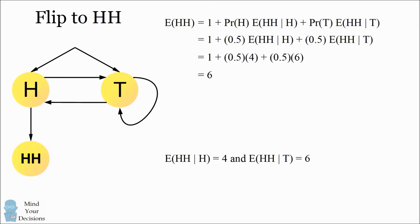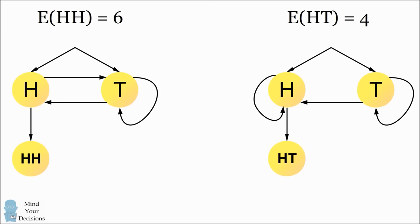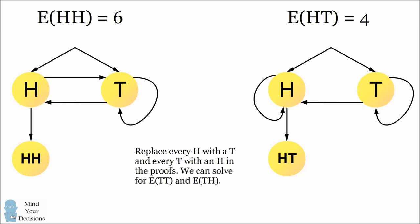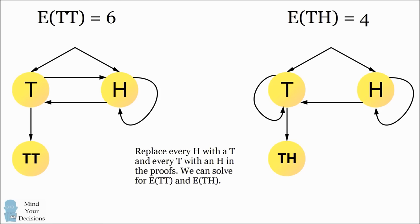There's one more thing we can do. If we replace H with T and T with H throughout our proofs, we can solve for the expected number of flips until we get two tails in a row and the expected number of flips until we get a tails followed by a heads. Making those substitutions, it'll take six tosses to get two tails in a row and four tosses to get a tails followed by a heads.